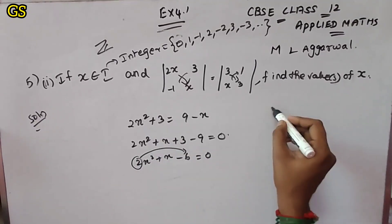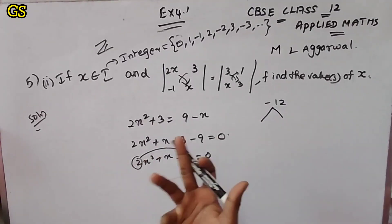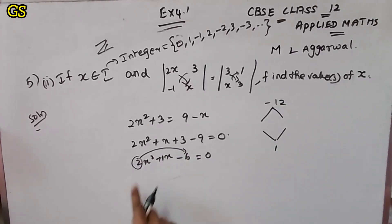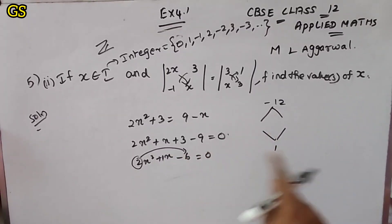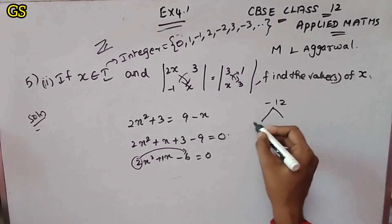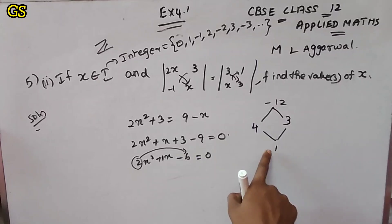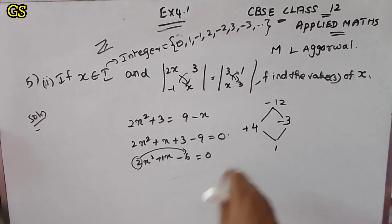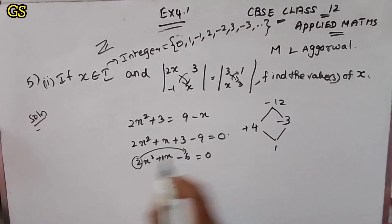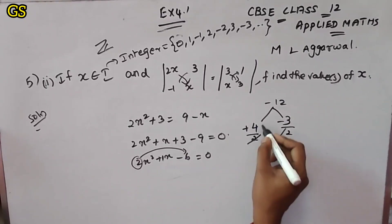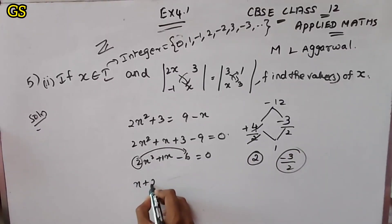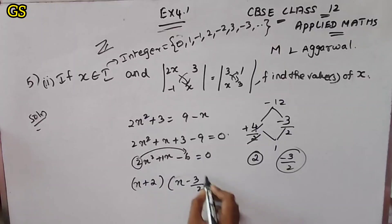Factorizing 2x² + x − 6 = 0: we get 2x × 6 = −12. We need factors of −12 that add to +1: that is 4 and −3, since 4 − 3 = 1. Using the shortcut method with x² = 2, dividing, we get x = 2 or x = −3/2.